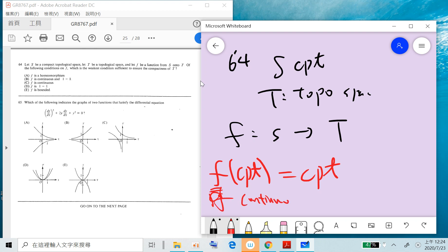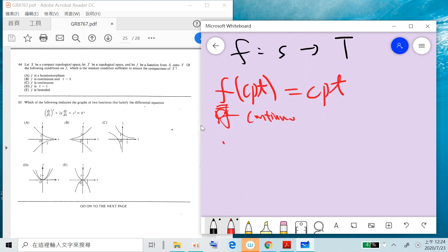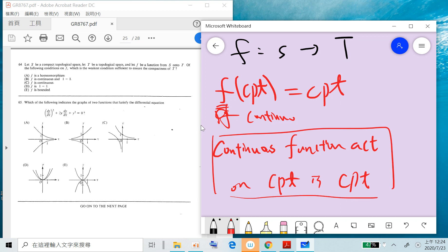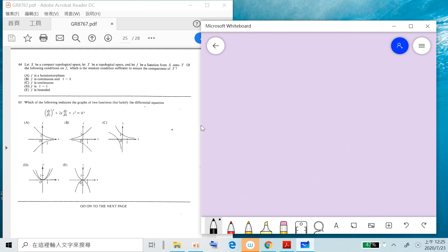A continuous function acting on a compact set is compact. So the answer is C. C is enough, right? Problem 64: answer C.